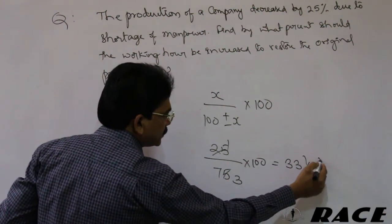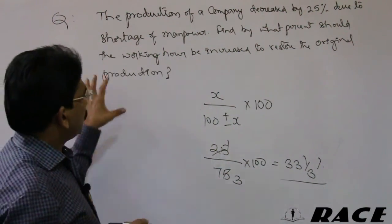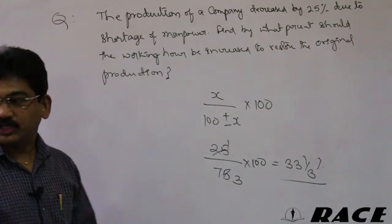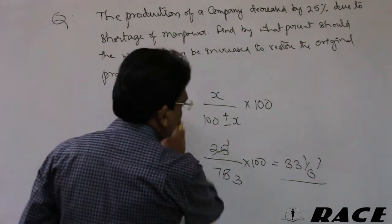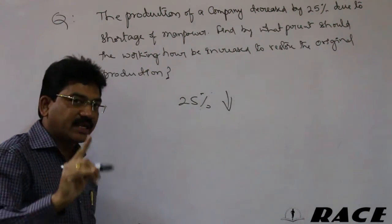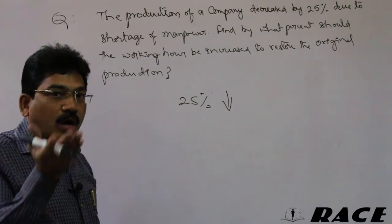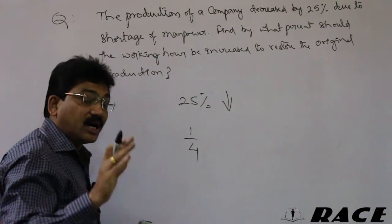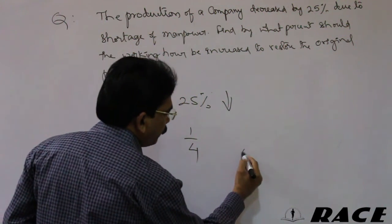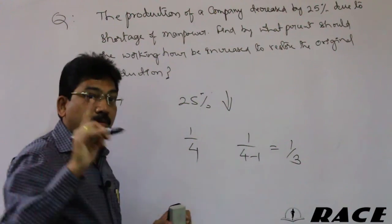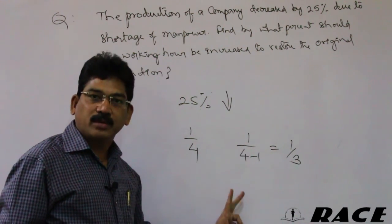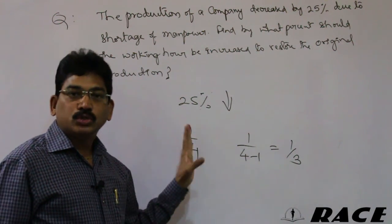Working hours should be increased by 33⅓ percent. There is also a shortcut: 25 percent means 1/4. When something decreases by 1/4, the remaining is 3/4, so the other variable must increase by 1/3 more — and 1/3 equals 33⅓ percent. Both the formula method and the shortcut give the same answer.